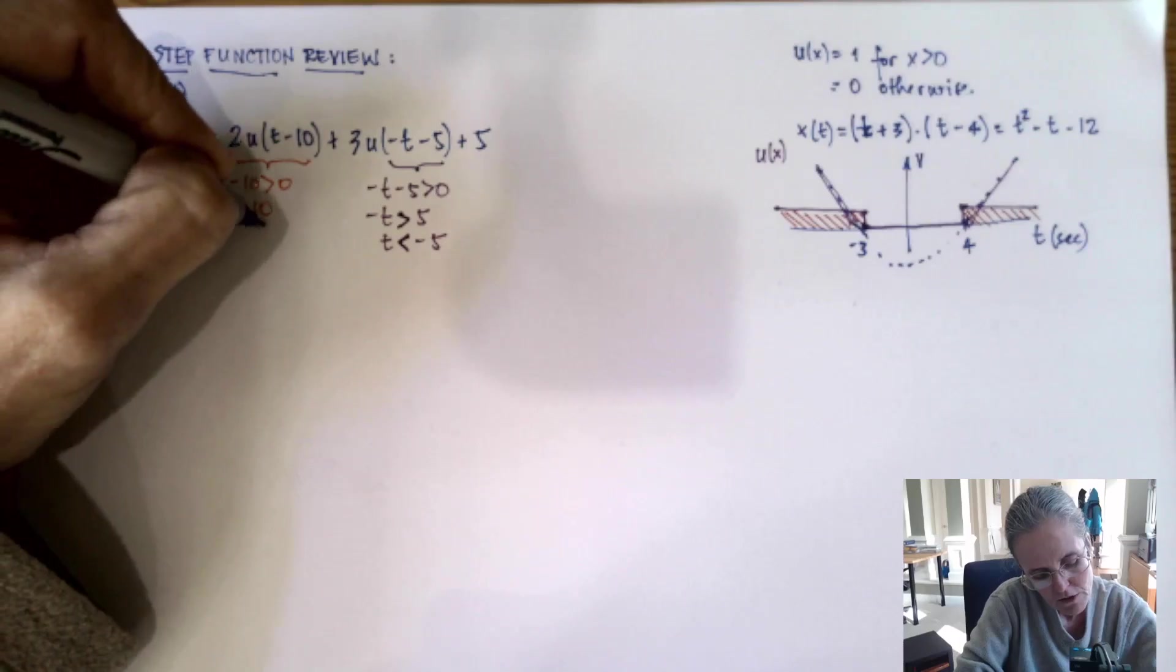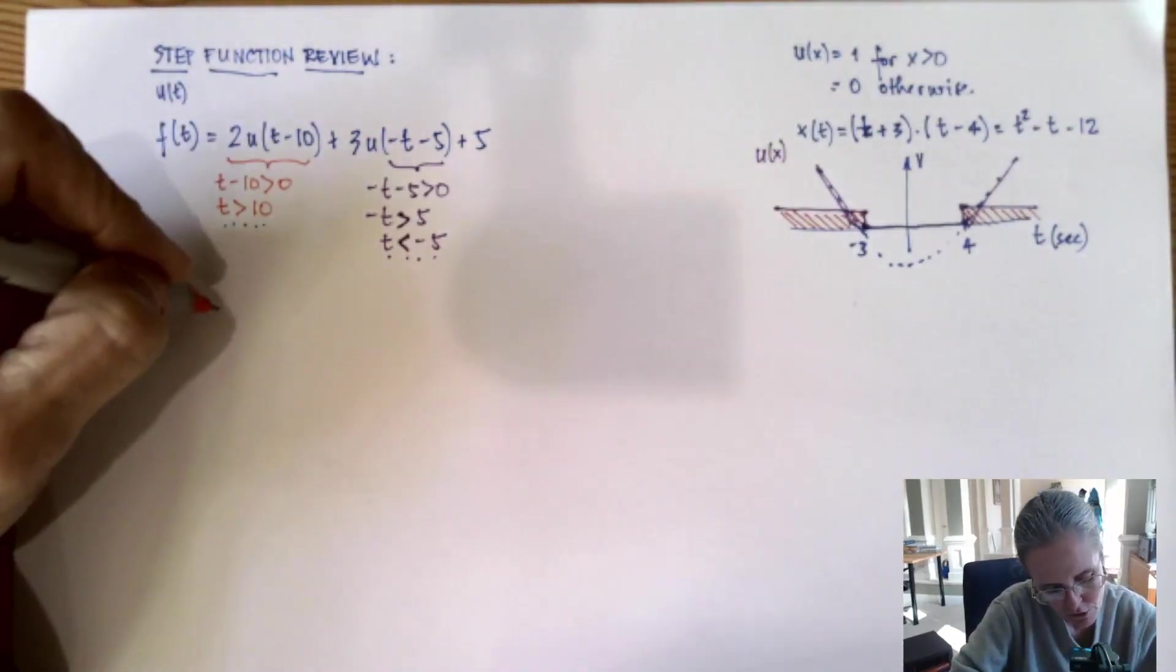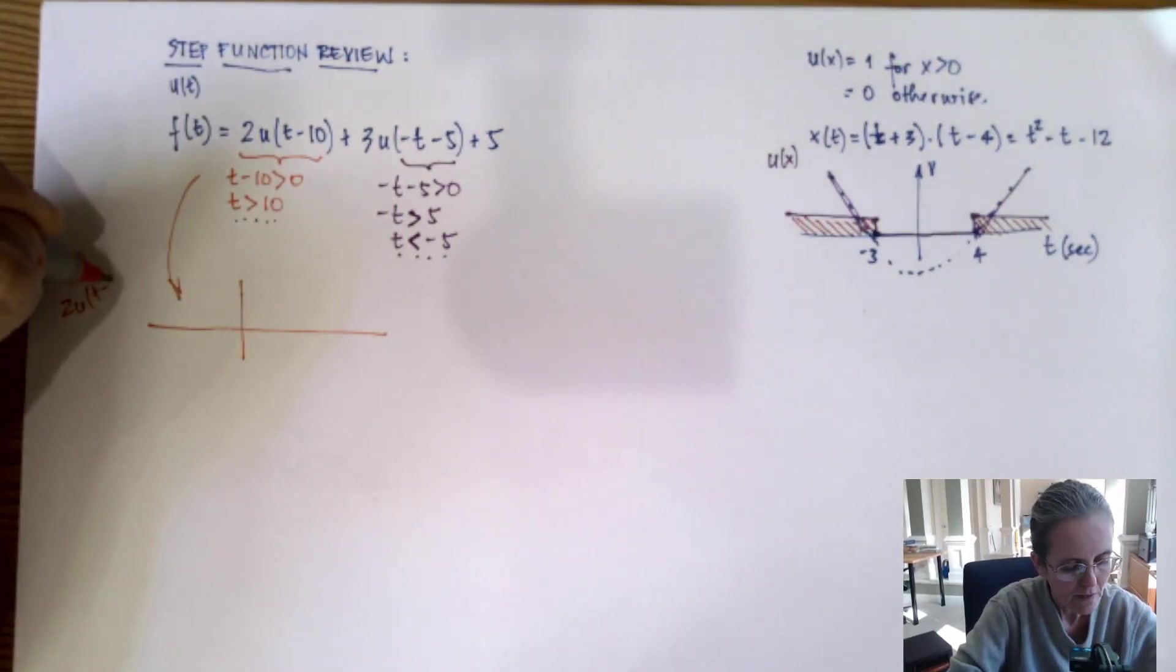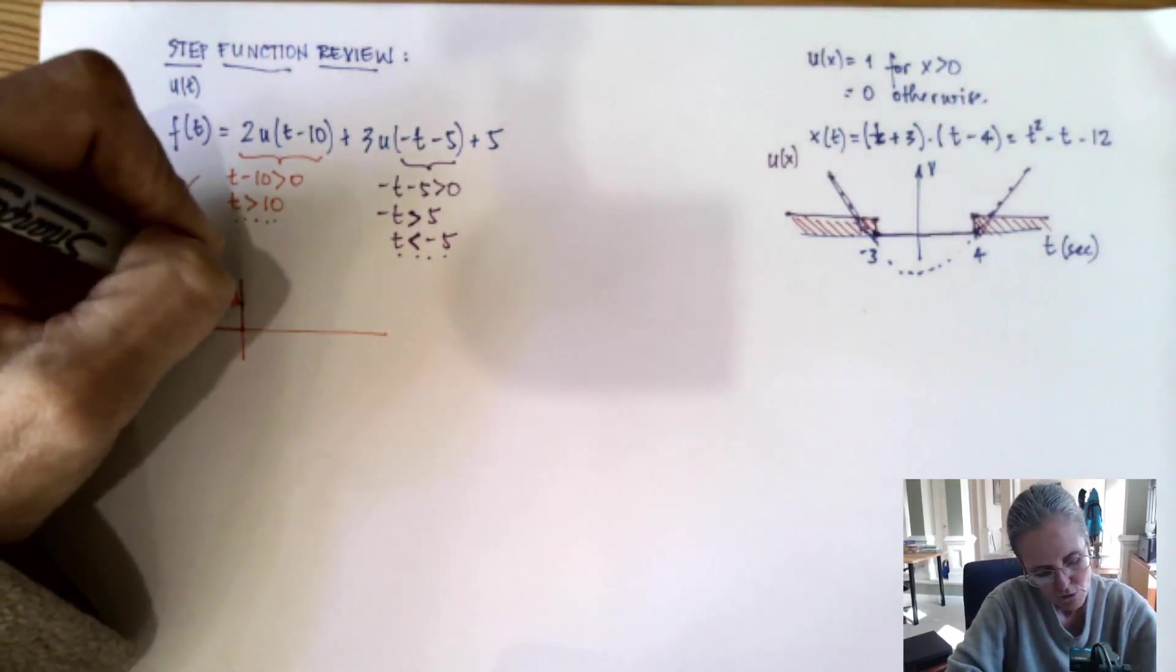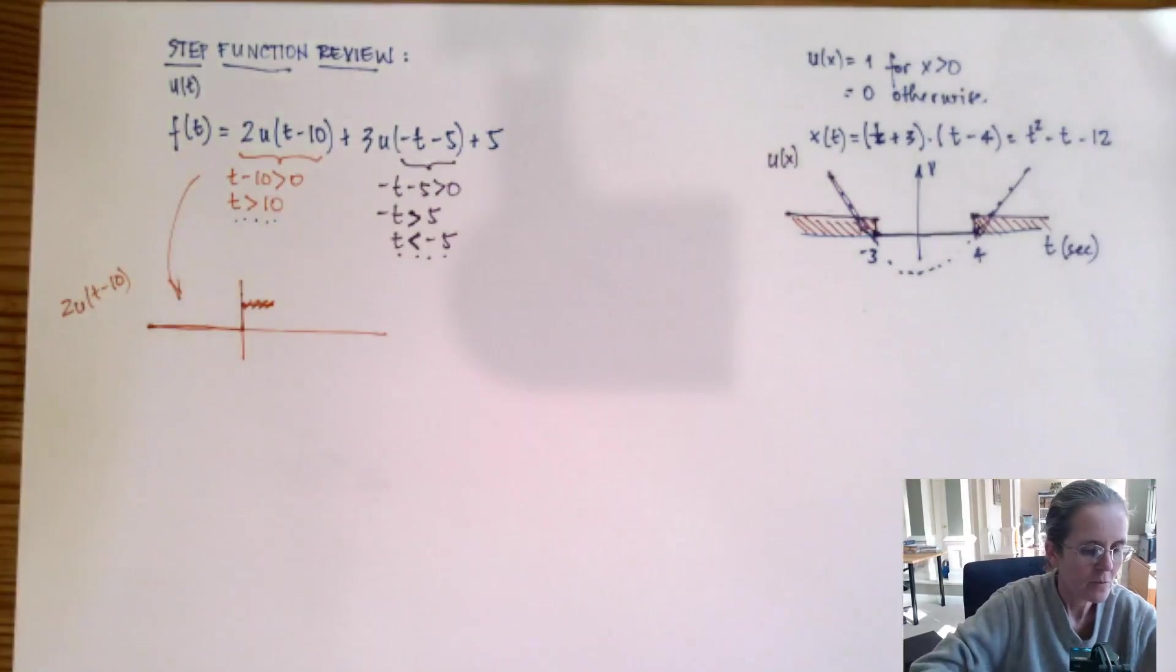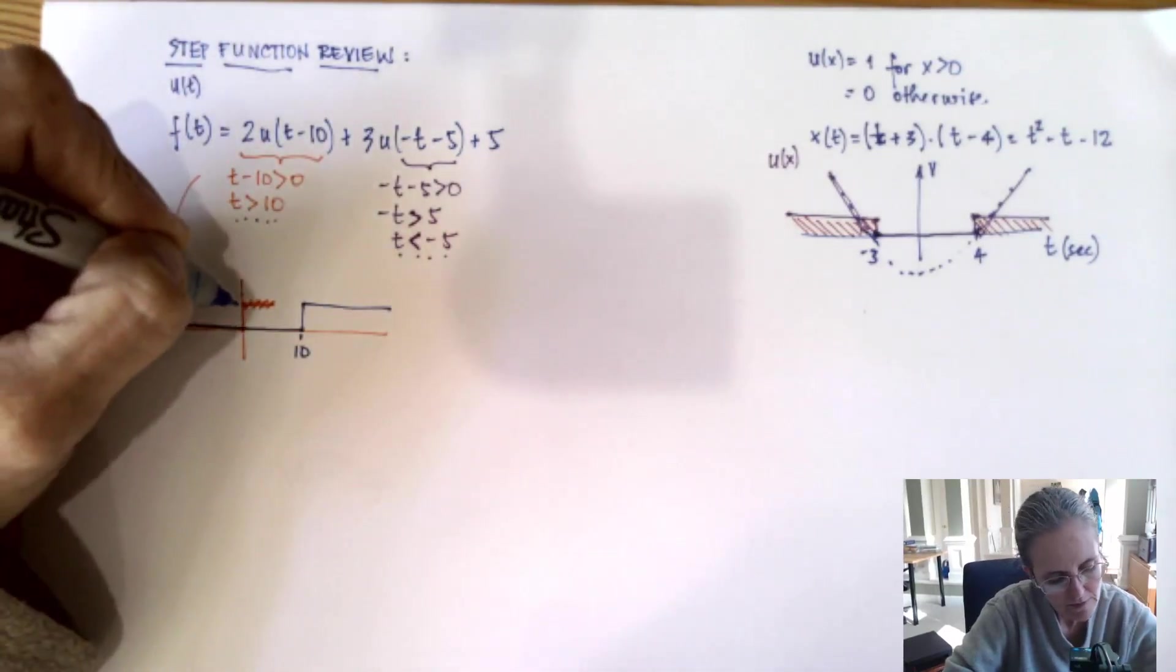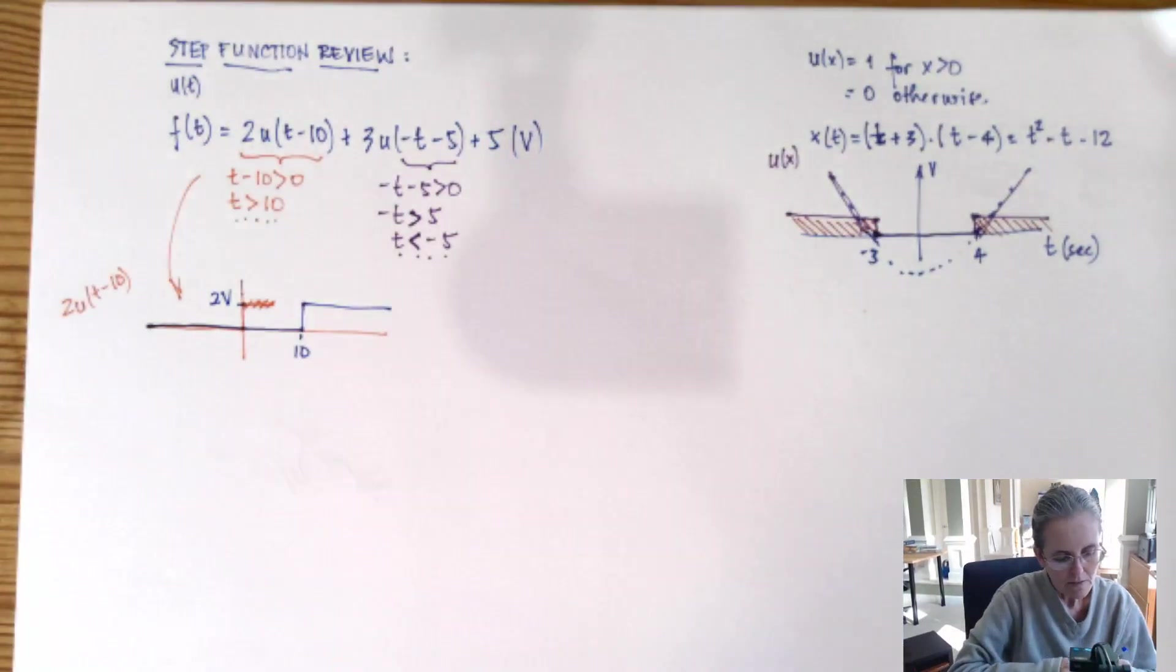These are the two conditions I got to remember and I can draw these very simply. This one is multiplied by two. So if I draw 2u(t-10), it's zero everywhere but then it goes to two for t larger than 10. So if this is 10 seconds, this is two volts.